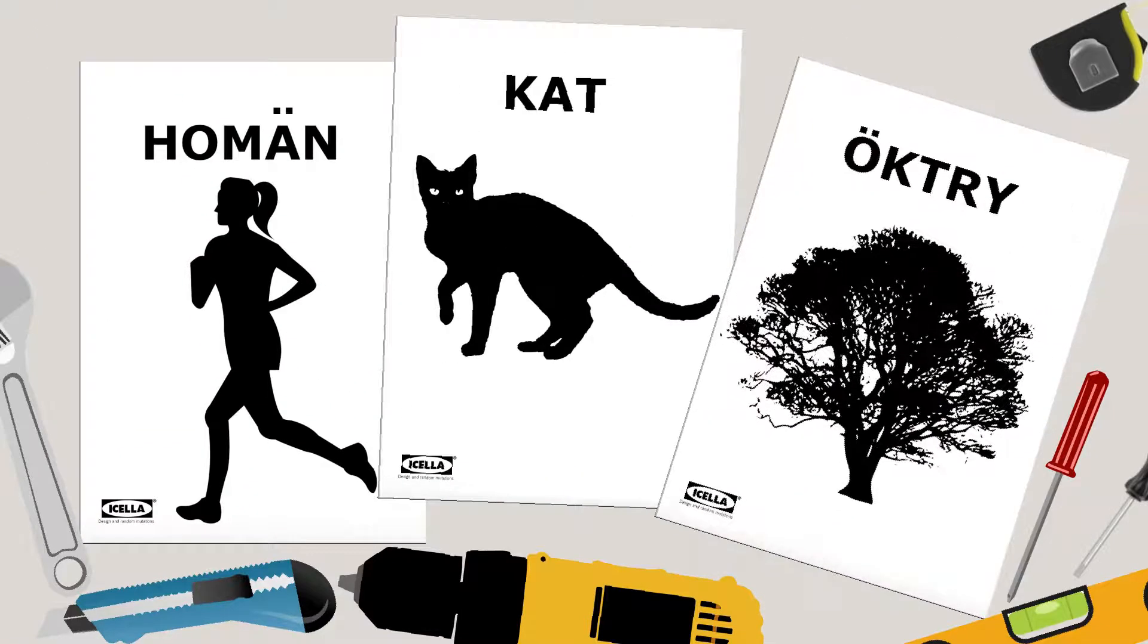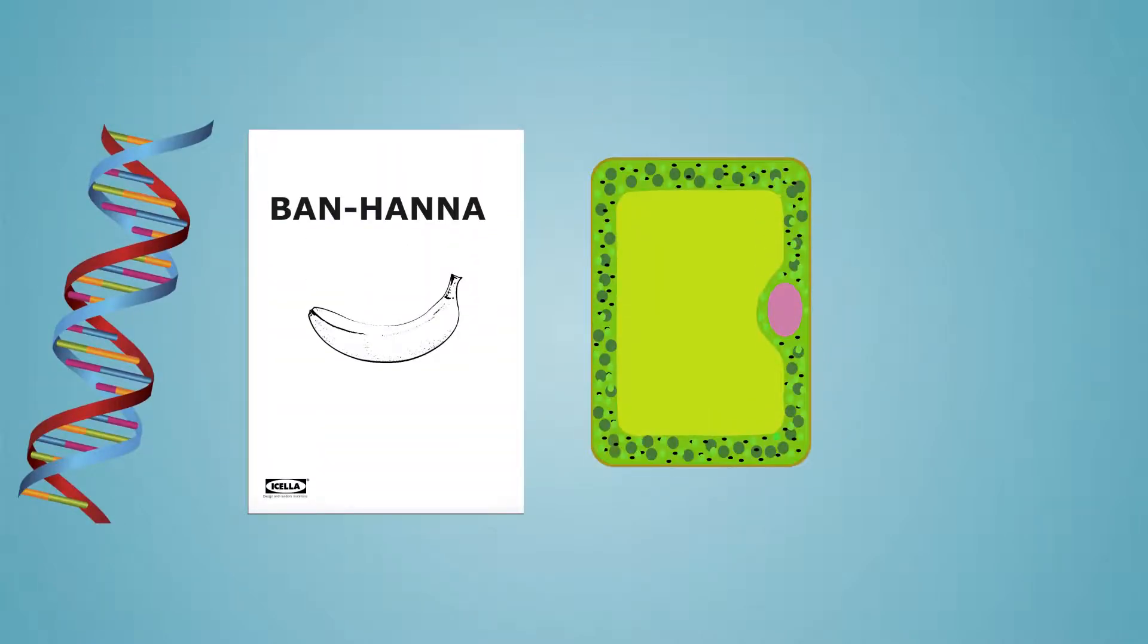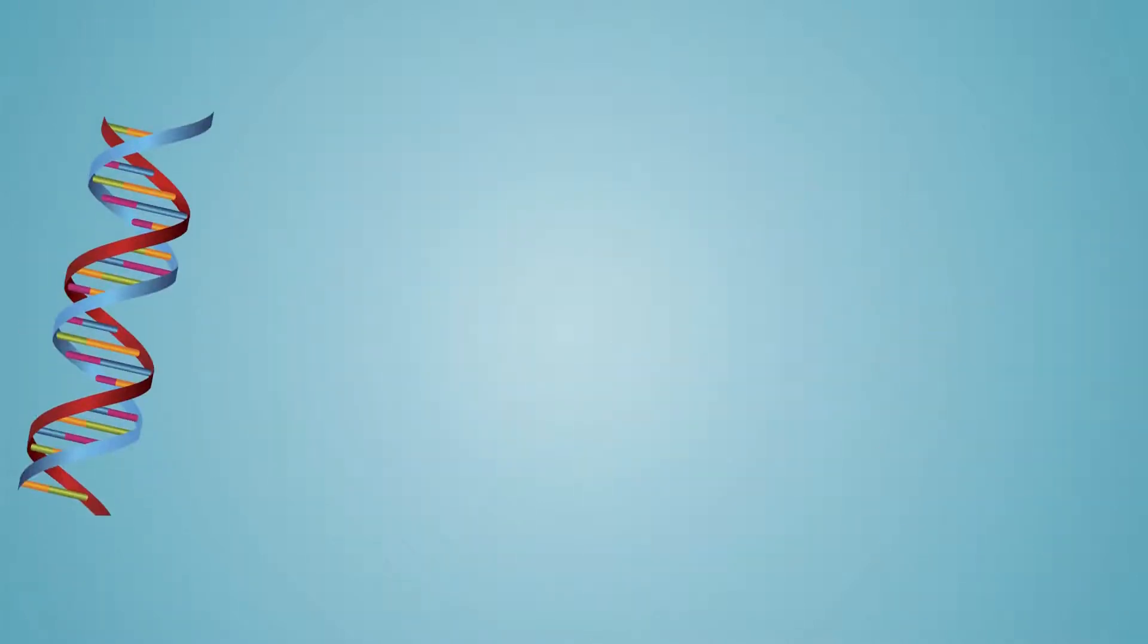DNA is like an instruction book for building living things. It contains instructions that tell cells what to make, how to grow, and how to multiply. So banana DNA is the instruction book that tells banana tree cells to become a banana tree and grow bananas.